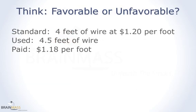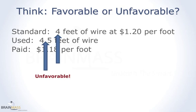Here we have a standard of four feet of wire for every unit we produce and we want to pay $1.20 per foot. But during the period we used four and a half feet of wire per unit produced and we paid $1.18. We should have used four feet of wire; we actually used four and a half feet — we used too much. That's unfavorable.